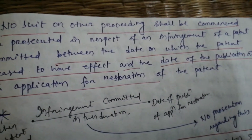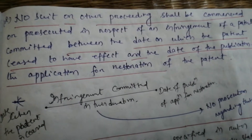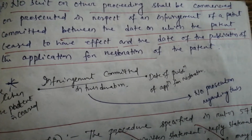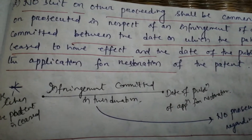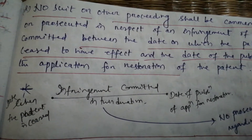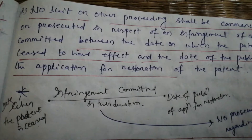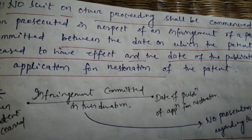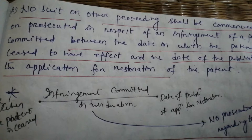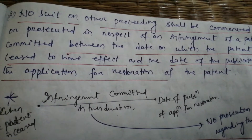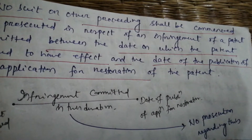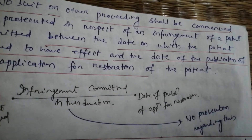Subsection 2: No suit or other proceedings shall be commenced or prosecuted in respect of an infringement of a patent committed between the date on which the patent ceased to have effect and the date of the publication of the application for restoration of the patent. Between this period, if a patent infringement is committed in this duration, then no prosecution can be done regarding this infringement.